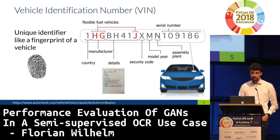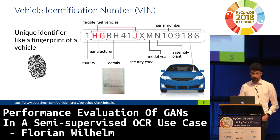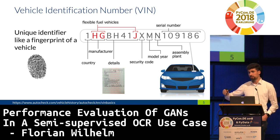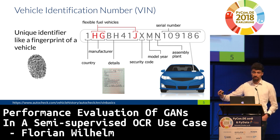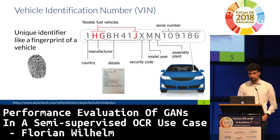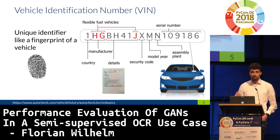Before I start with the use case, you need to understand what the so-called vehicle identification number, or VIN for short, is. It's like a unique identifier for your car. If you look at the VIN shield on the lower right side of your car, you see a 17-digit number that gives you a lot of details about the car — like the manufacturer, model, year, and even something about the engine. It's like a fingerprint for your car.